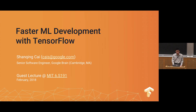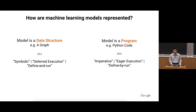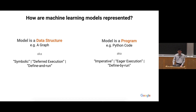Before we dive into debugging, I want to talk about how machine learning models are represented in a computer, because that turns out to be important for how you write and debug your programs. There are two ways in which a machine learning model can be represented: either as a data structure or as a program. If it's a data structure, then when you write code to define a layer of a neural network, you're actually building a graph. Those lines of code, when executed, don't actually do the computation — they're just building a graph. The graph needs to be later fed into some kind of execution engine to actually run the model.